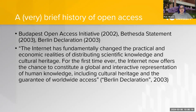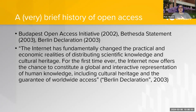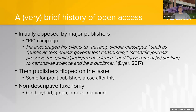To understand where open access came from: there are three key founding documents — the Budapest Open Access Initiative in 2002, and the Bethesda Statement and Berlin Declaration in 2003. The Berlin Declaration basically said: the internet makes everything easier, we don't have to pay all this money to share scientific information anymore, we can share with everybody, and everyone should have access to it.